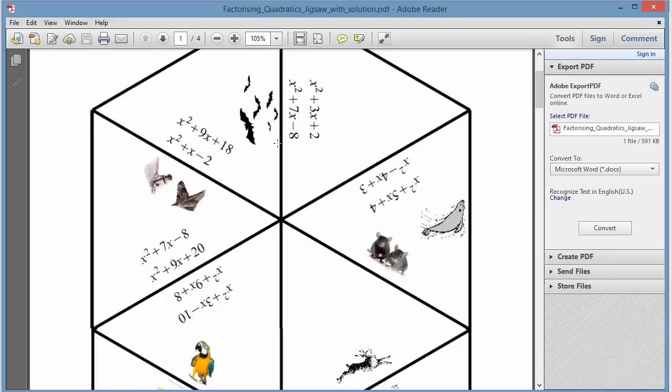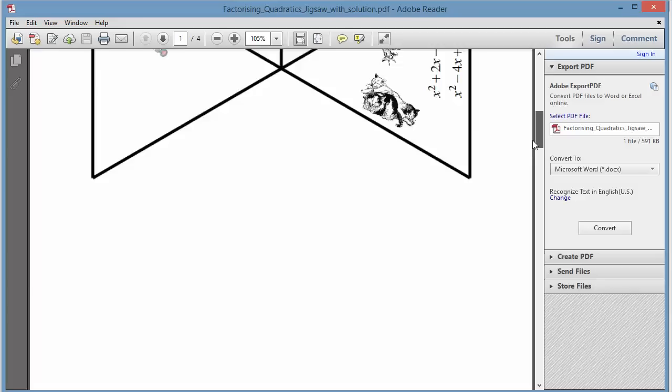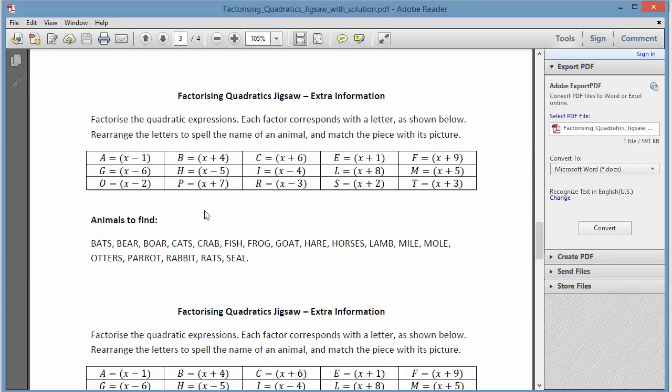Those of you who are familiar with Tarsia will know this is the output screen. This gets printed out and the kids cut these triangles up. The students have to factorise the quadratics and find the two linear factors of each one. Once they've found them, they look down on this code sheet, and if for example it's got a factor of x minus one and a factor of x plus seven, then that will be a letter A and a letter P.